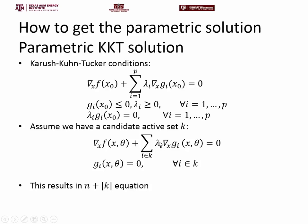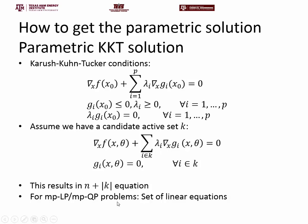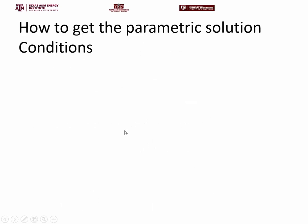We have x with n dimensions, lambda with cardinality-of-K dimensions — because multipliers for inactive constraints are zero — and theta. For an mpLP or mpQP problem, this becomes a set of linear equations, yielding the parametric solution x and lambda as functions of theta. You can verify this yourself on paper: given a candidate active set, you can solve this as a function of theta directly.